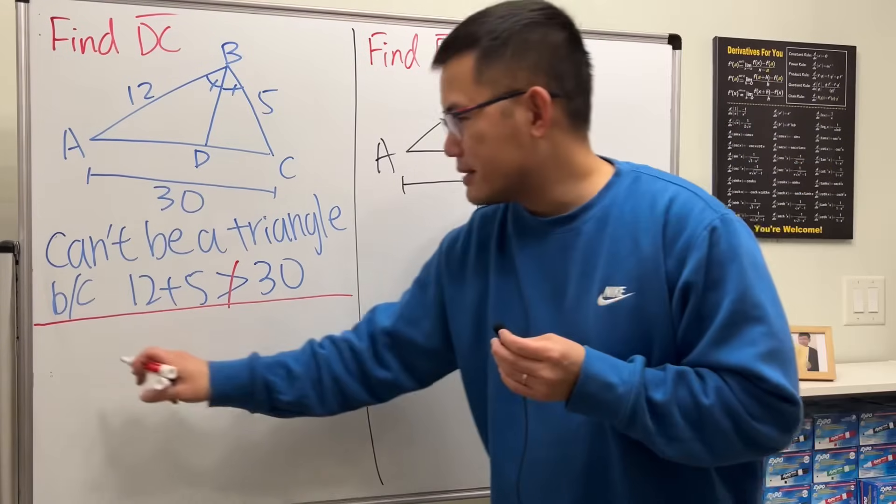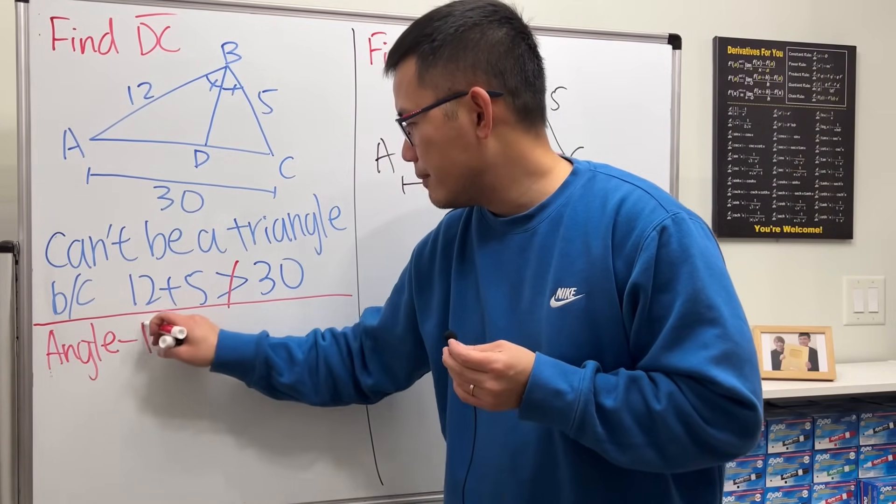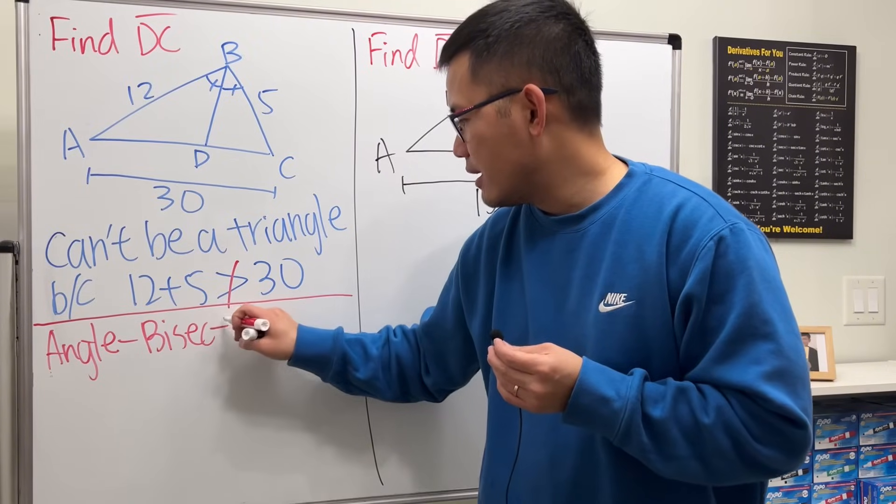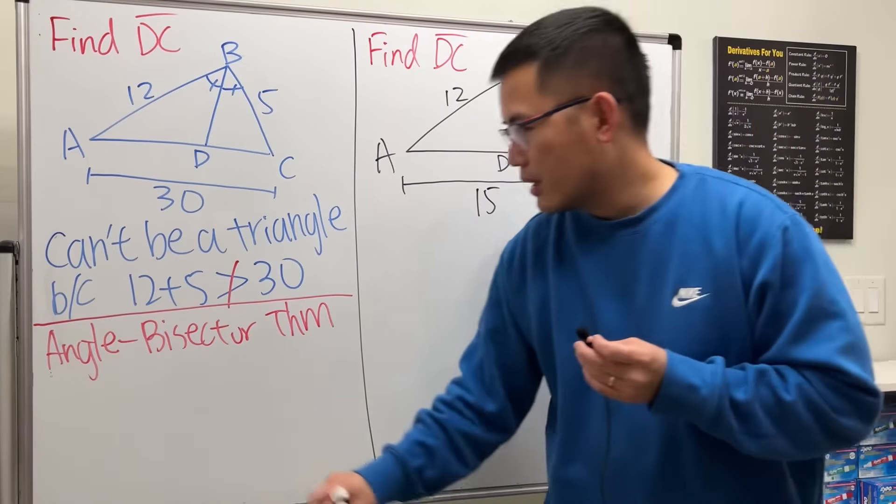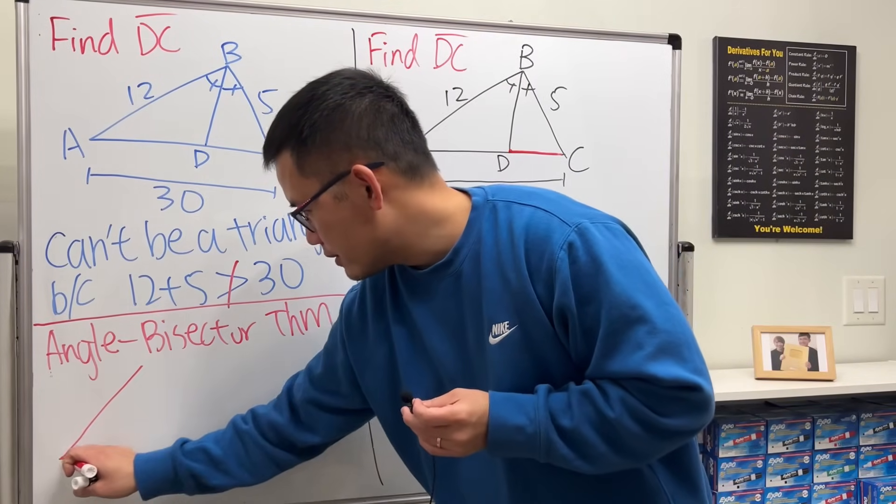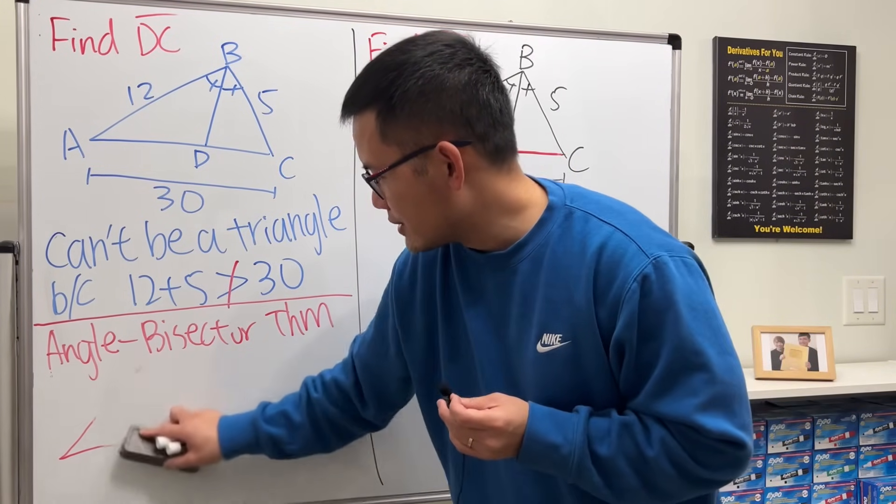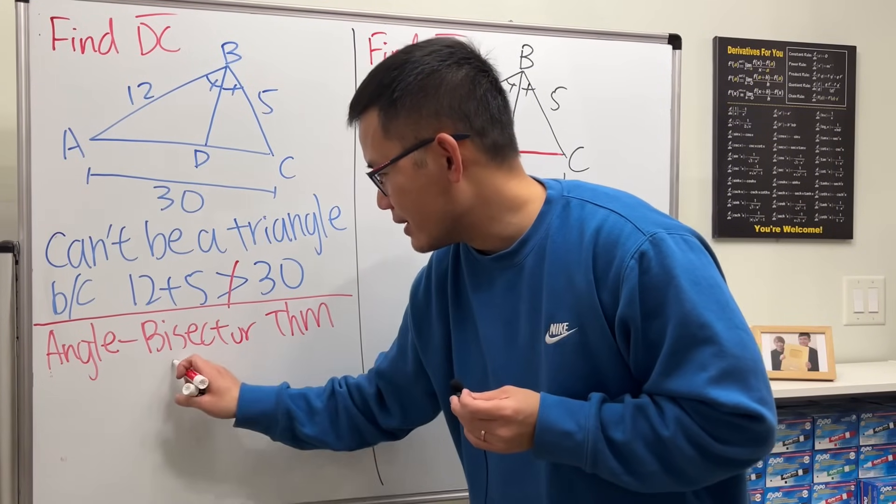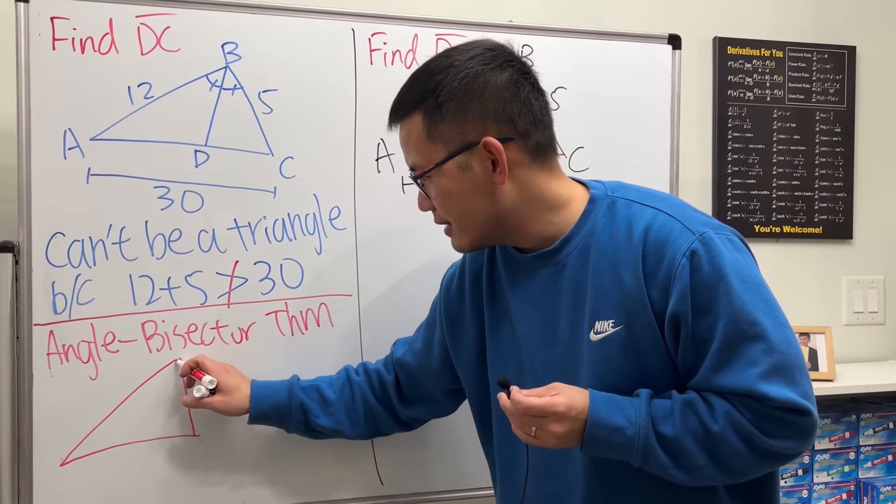Well, here is the angle bisector theorem that I would like to remind you. When we have a triangle, doesn't matter what kind of triangle - but this looks like equilateral, so it's too perfect. I don't want that. So let's take a look right here instead, something like this.